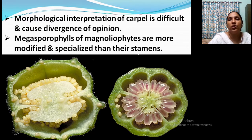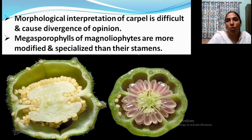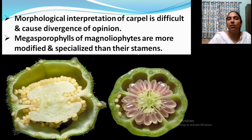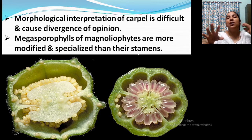It is still a controversy with divergence of opinion. But generally, some points are accepted — the ancestors are the megasporophyll-bearing plants, that is our gymnosperms. From that, the primitive angiosperms like magnoliophytes arose. The structures in such magnoliophytes and gymnosperms are modified and specialized more than the male part or stamens. In the case of carpel, it is very much modified and specialized compared to that of stamens. That is why understanding the evolution of carpel is very difficult.